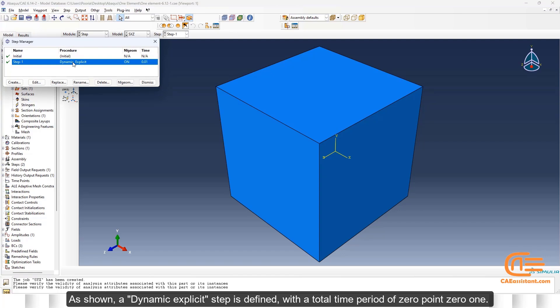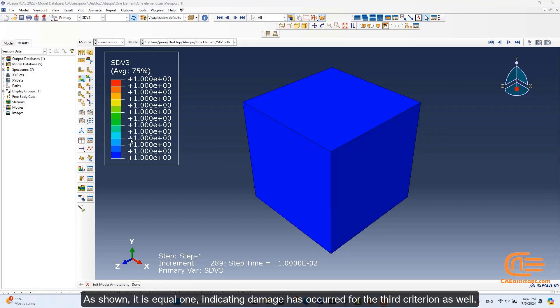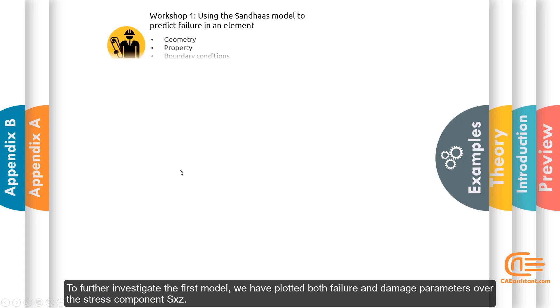As shown, a dynamic explicit step is defined, with a total time period of 0.01. As shown, it is equal to 1, indicating damage has occurred for the third criterion as well.